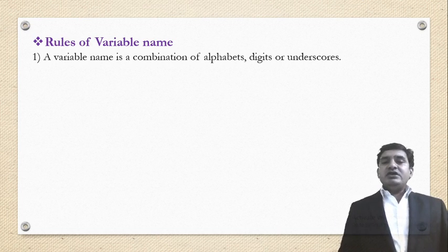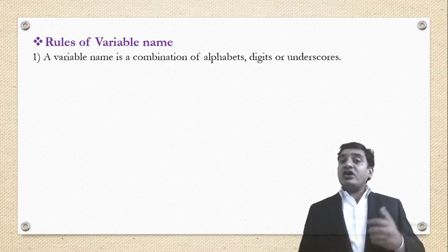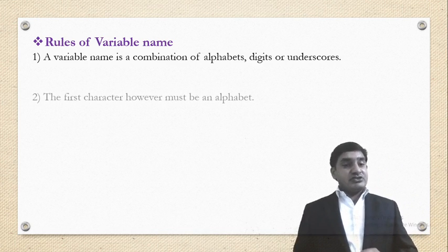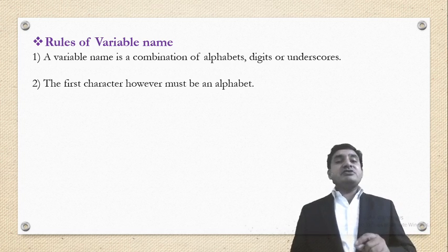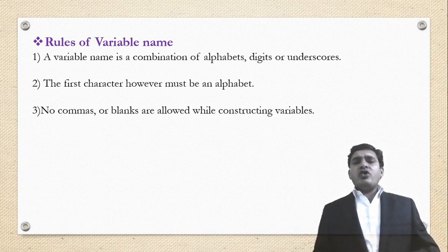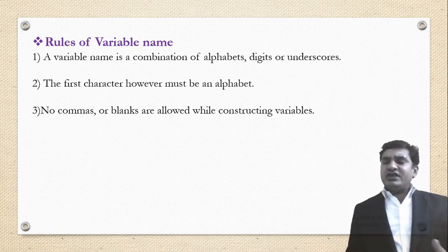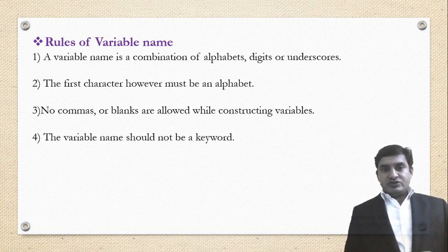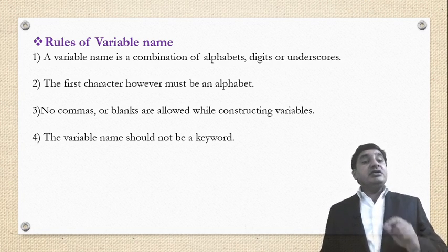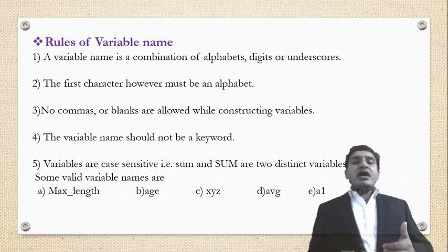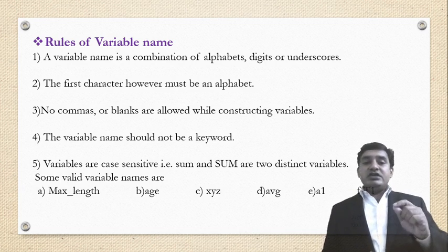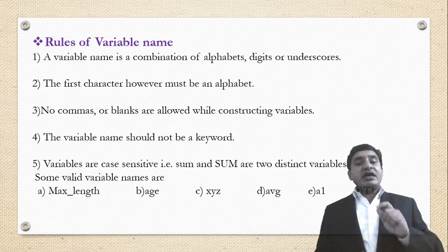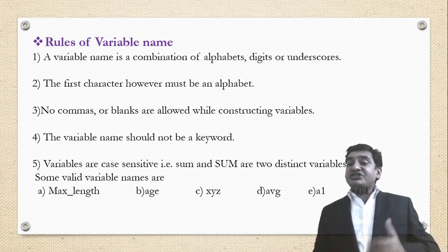Rules of a variable name: A variable name is a combination of alphabet, digit, or underscore. The first character, however, must be an alphabet. No commas or blank spaces are allowed while constructing a variable name. The variable name should not be a keyword, because keywords have a specific meaning stored in the compiler. Variables are case sensitive — 'sum' in lowercase and 'SUM' in uppercase are two distinct variables.